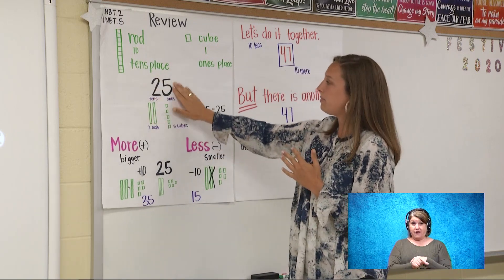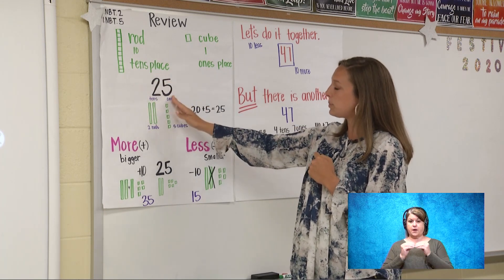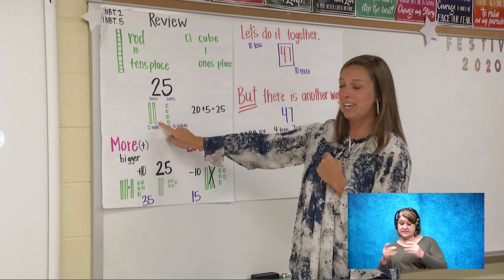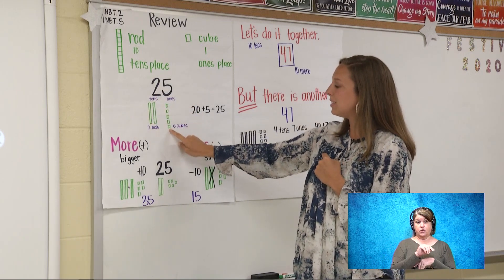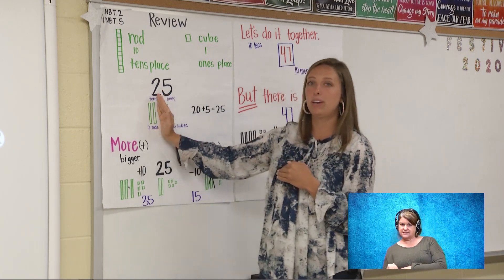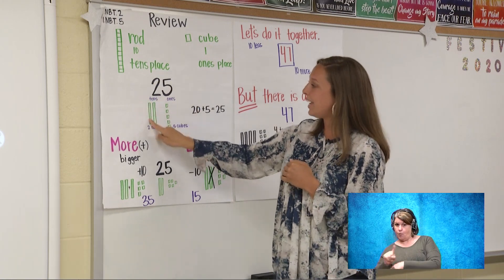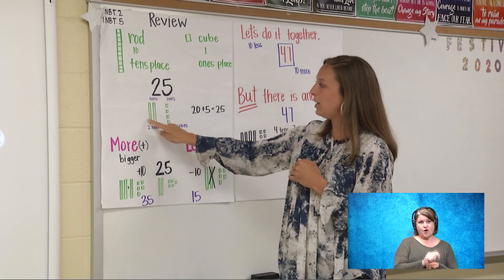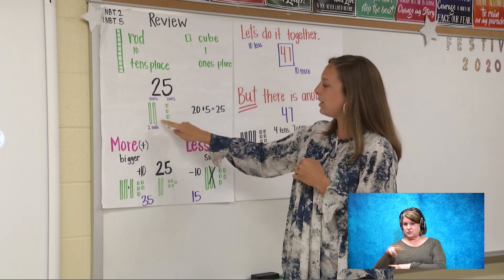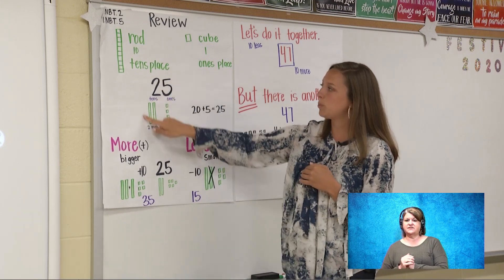Looking at our number 25, it's a two-digit number. We have a tens place and a ones place. In the number 25, we have two tens and five ones. When you count the tens place, you count by tens and when you count the ones place, you count by ones. Let's do it together: 10, 20, 21, 22, 23, 24, 25.